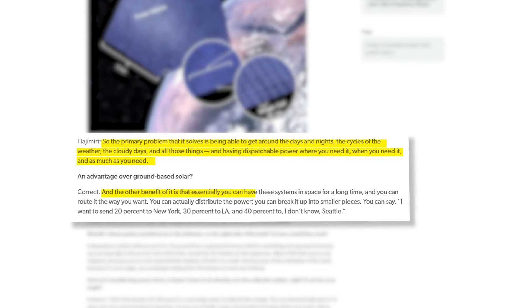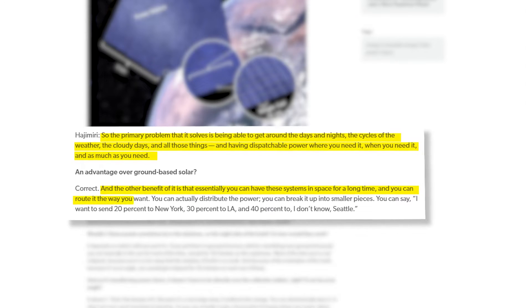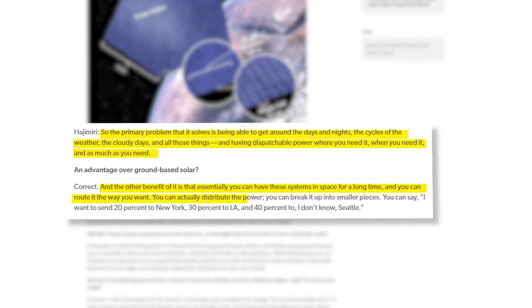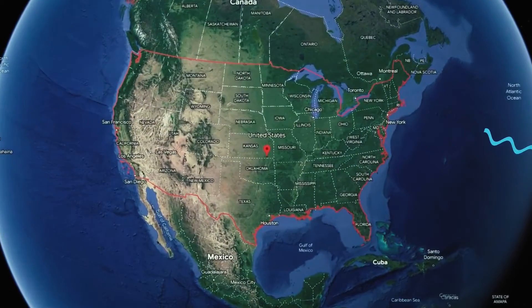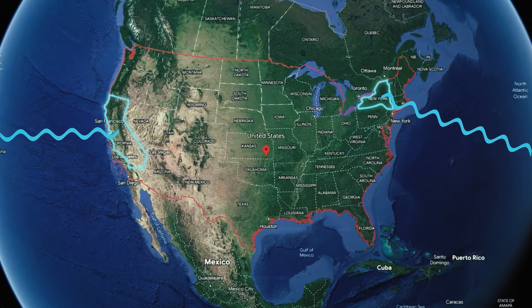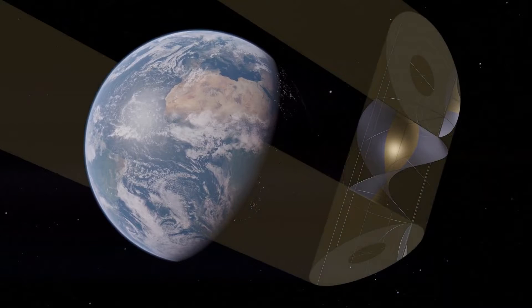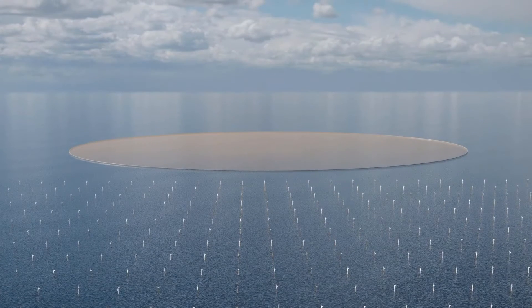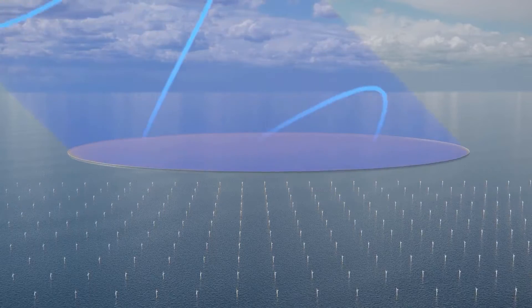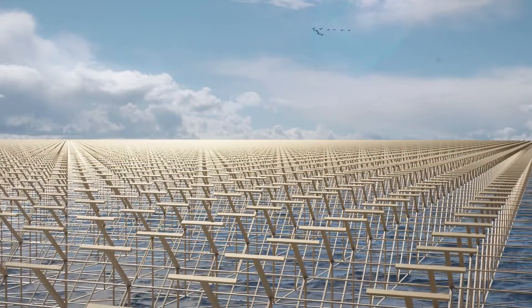And the other benefit of it is that essentially you can have these systems in space for a long time, and you can route it the way you want. You can actually distribute the power. You can break it up into smaller pieces. You can say, I want to send right now 20% to New York, 30% to LA, and 40% to, I don't know, Seattle. With this technology, we're looking at a clean, renewable energy source that has the capacity to generate enormous quantities of energy with an environmental impact that is minimized relative to its gains.